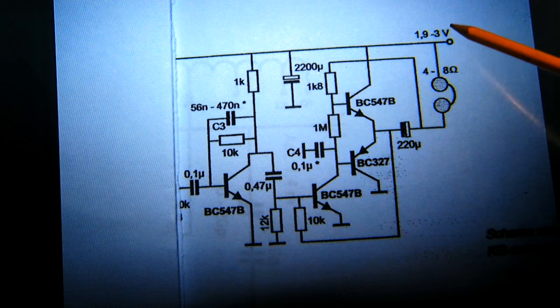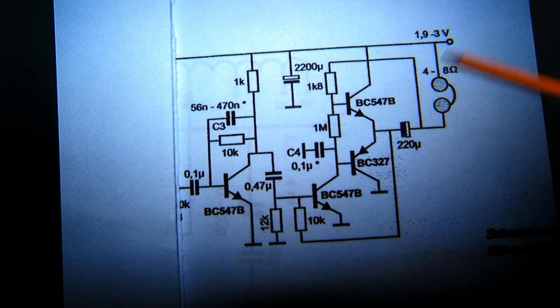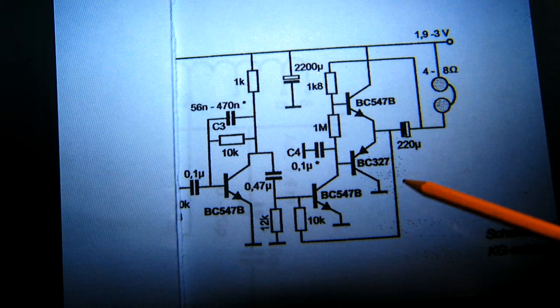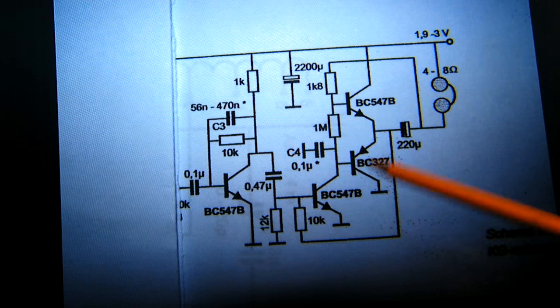That will prevent the amplifier from starting to oscillate when the battery is depleted. When the battery is at its end, the internal resistance can raise substantially, and that makes an amplifier like this start to oscillate.